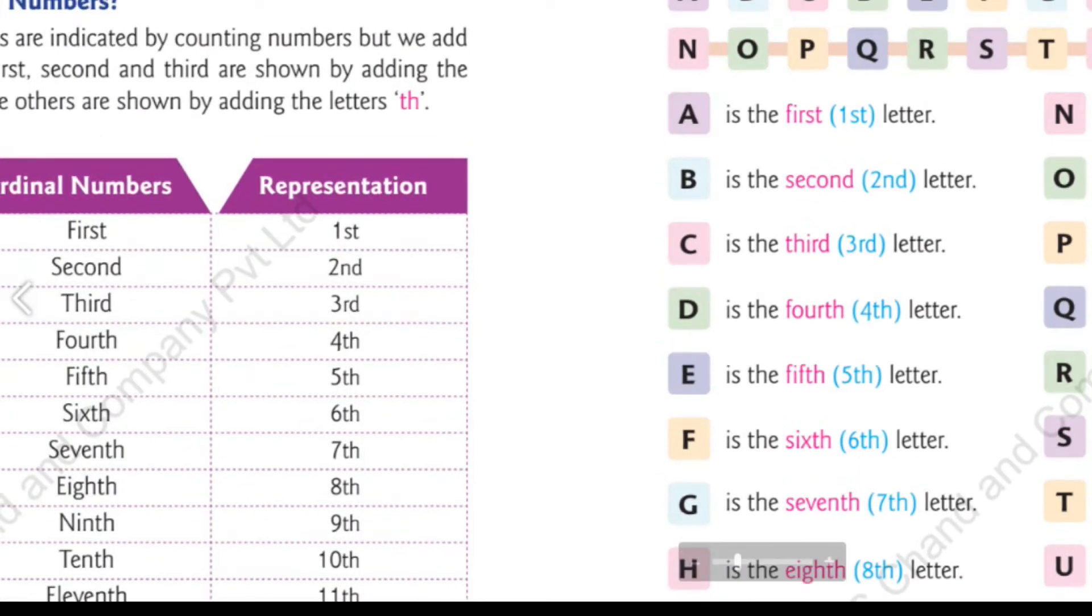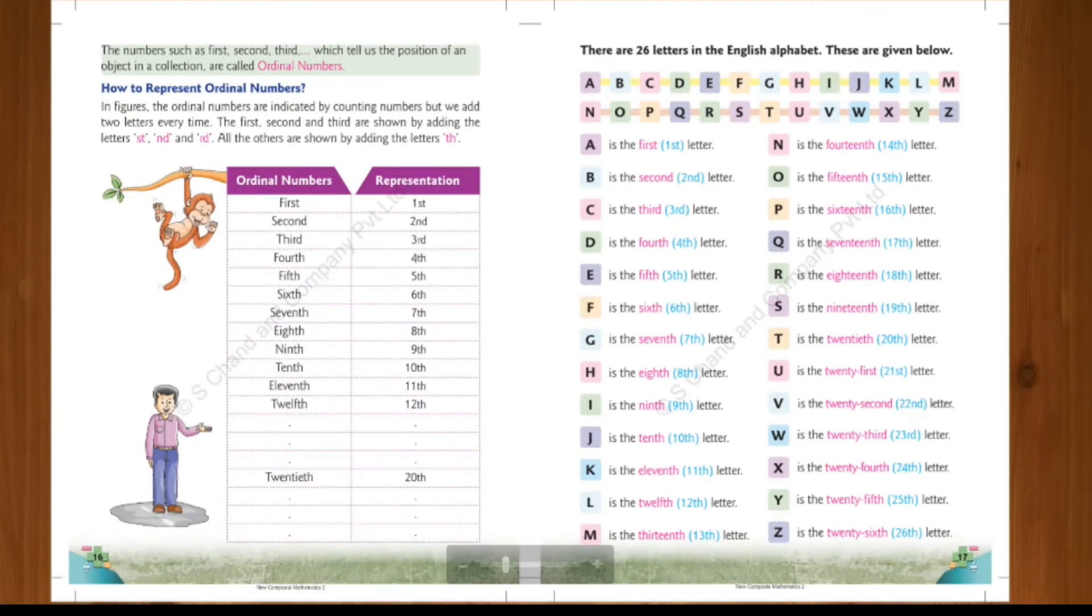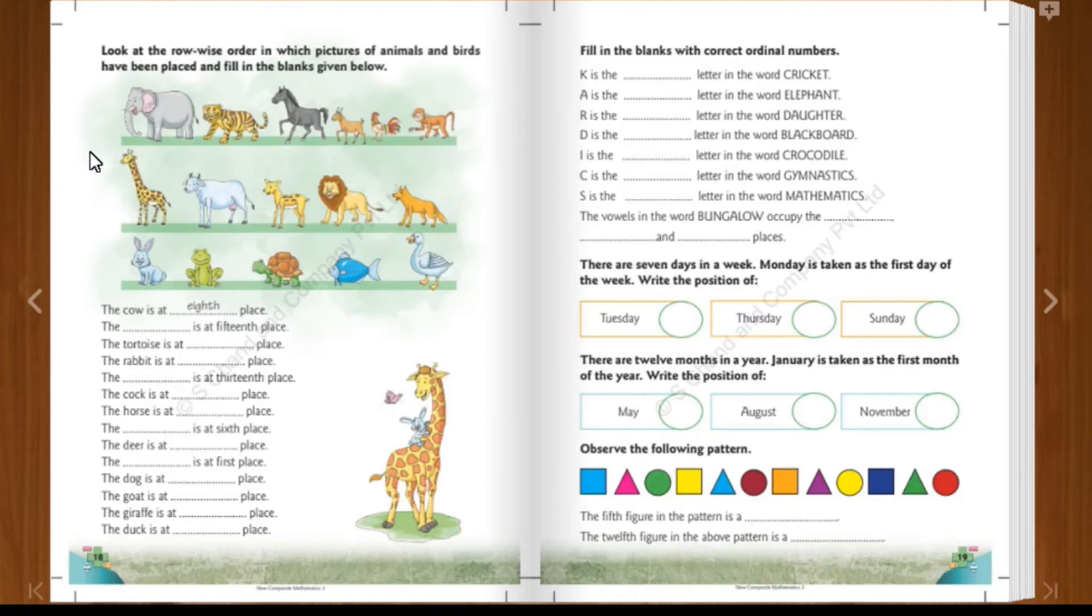Now we will go ahead to the next topic. It is the exercise topic. So, here 16 animals are in a queue. By seeing the 16 animals, you have to fill the blanks. Cow. 1st, 2nd, 3rd, 4th, 5th, 6th, 7th, 8th. Cow is at the 8th place.